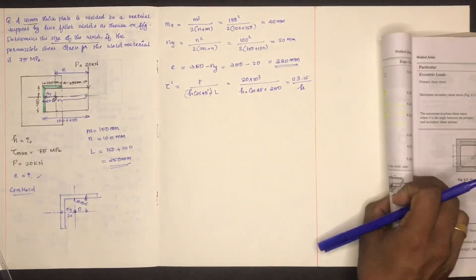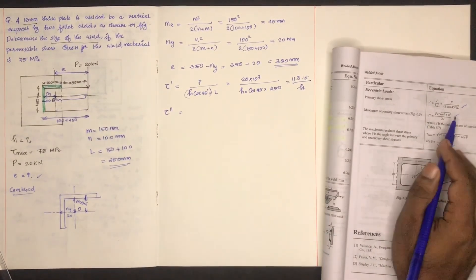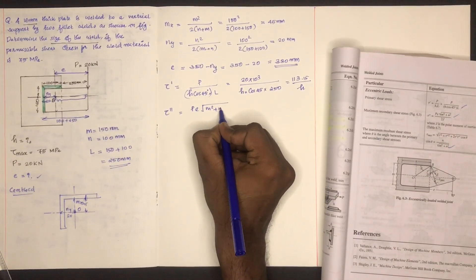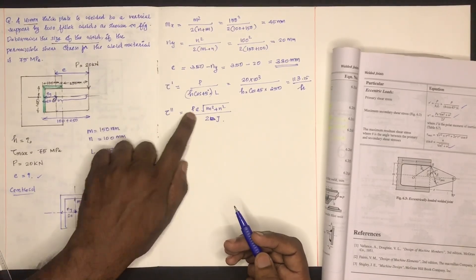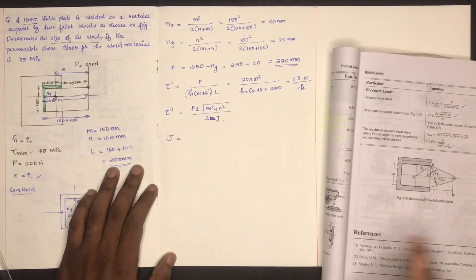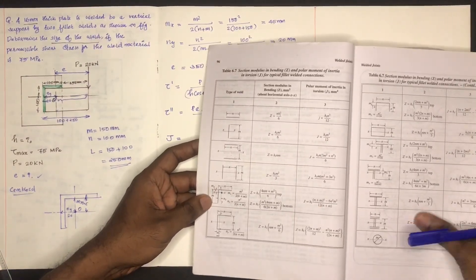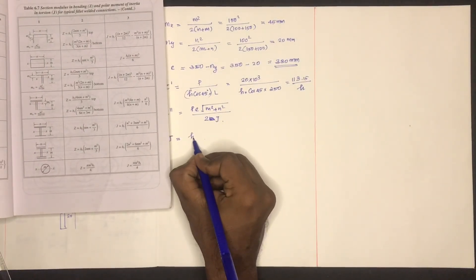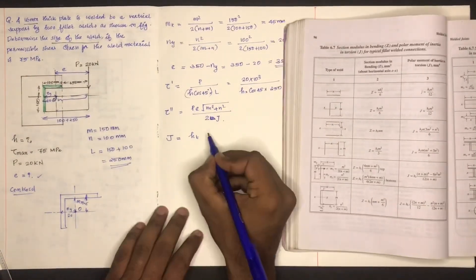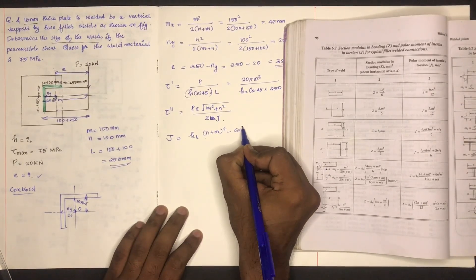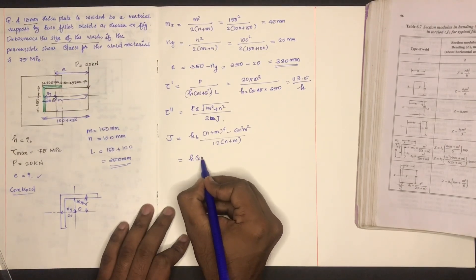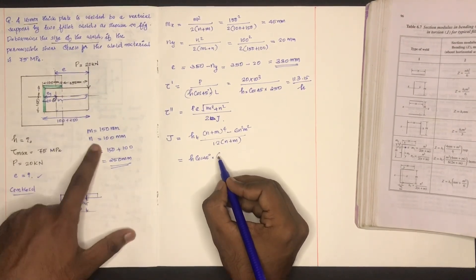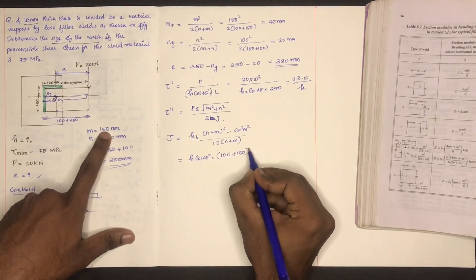The secondary shear stress τ'' is calculated by substituting P into: τ'' = P·√(m²+n²) / (2·J). The polar moment of inertia J for this section is: J = (h·t / (12·(N+M))) · [(N+M)⁴ − 6·N²·M²], multiplied by h·cos45° into (N+M).